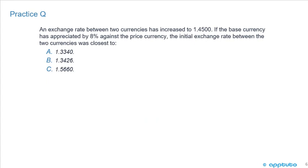Another practice question, and this is key because, as you can see, it's phrased a different way. And that's why the secret to success is to do as many practice problems as possible because you'll see that you basically understand a concept, but the way that the question is presented to you is different. In this case, an exchange rate between two currencies has increased to 1.45. If the base currency has appreciated by 8% against the price currency, the initial exchange rate between the two currencies was closest to A, 1.334, B, 1.3426, or C, 1.566.